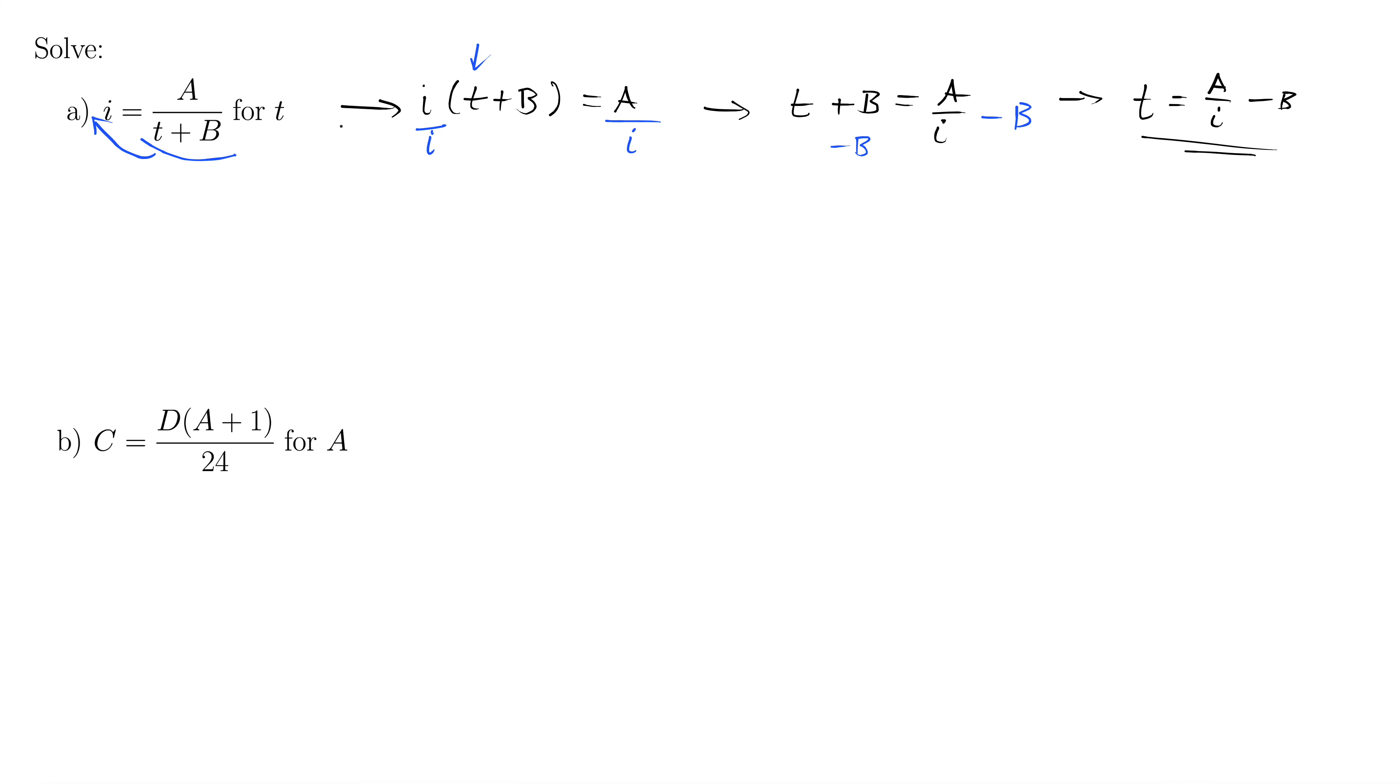A slightly different way we could have done this. We could have instead, right here at this step, multiplied this i through, distributed it through. What would happen there? Well, we would have it plus iB equals A. We're still trying to isolate this t, so I'm going to subtract the iB from both sides. Minus iB minus iB. So now we have it equals A minus iB. And finally divide both sides by i. And we'll just treat this as a standard answer right here, A minus iB over i. Another answer.